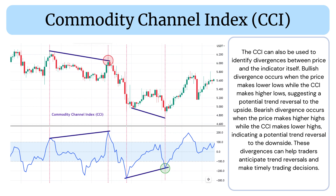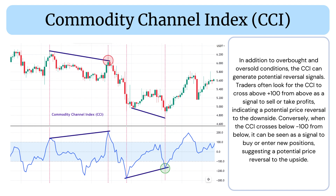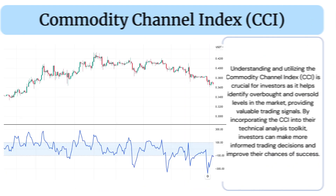These divergences can help traders anticipate trend reversals and make timely trading decisions. In addition to overbought and oversold conditions, the CCI can generate potential reversal signals. Traders often look for the CCI to cross above +100 from above as a signal to sell or take profits, indicating a potential price reversal to the downside. Conversely, when the CCI crosses below -100 from below, it can be seen as a signal to buy or enter new positions, suggesting a potential price reversal to the upside.